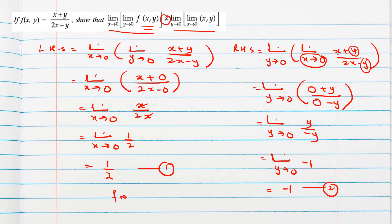From equations 1 and 2, we can conclude LHS and RHS are not equal, hence proved.